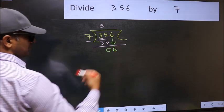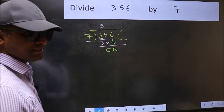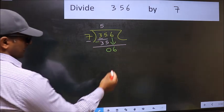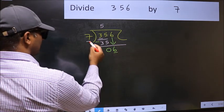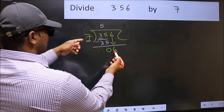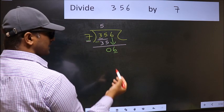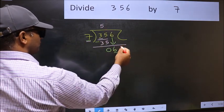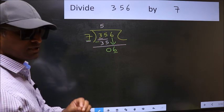After this step, the mistake happens. And the mistake is this: here we have 6 and here 7. 6 is smaller than 7. So what many do is they directly put dot and take 0, which is wrong.